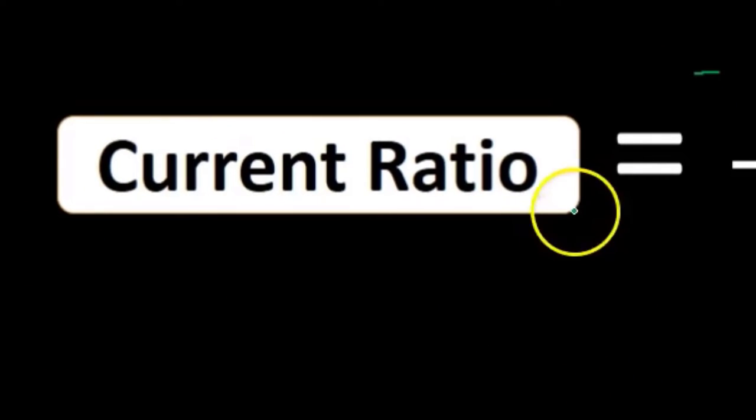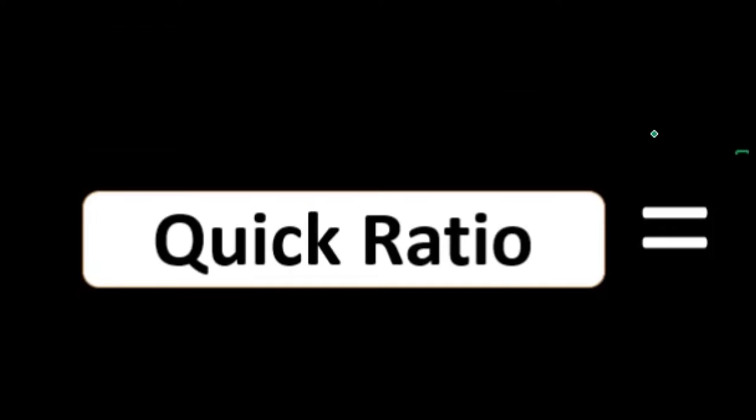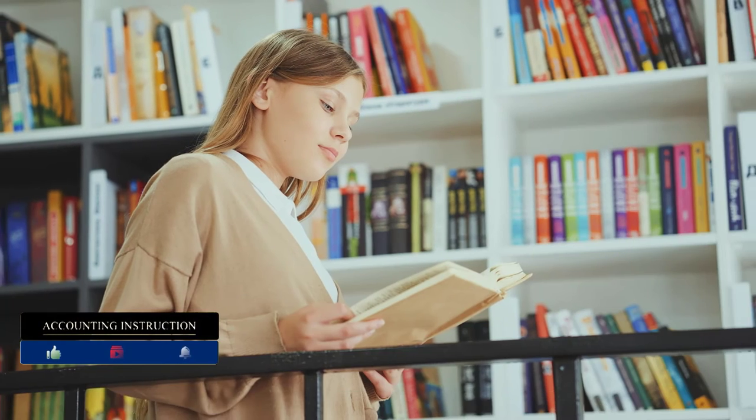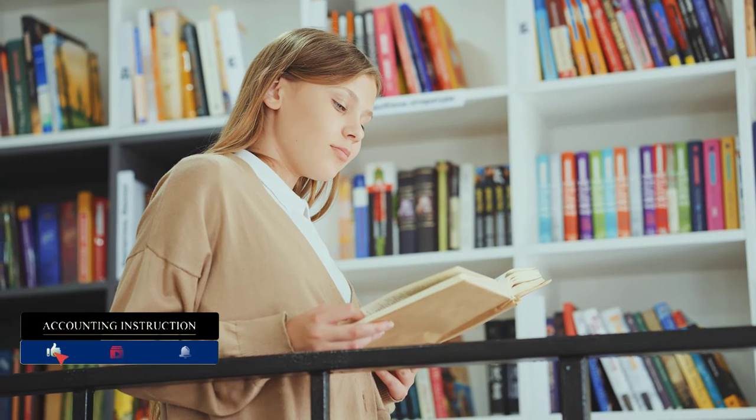So generally, inventory is something included in current assets. We're going to go ahead and take that out of quick assets and say, what if we didn't even sell any of the inventory on the books as an asset? Then let's take a look at our current liabilities.